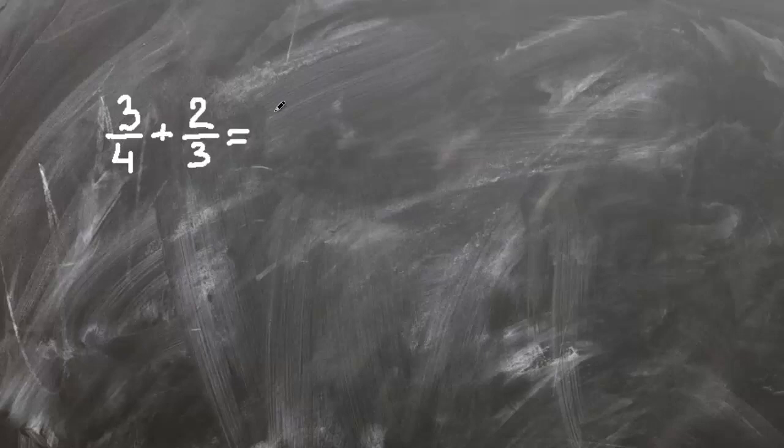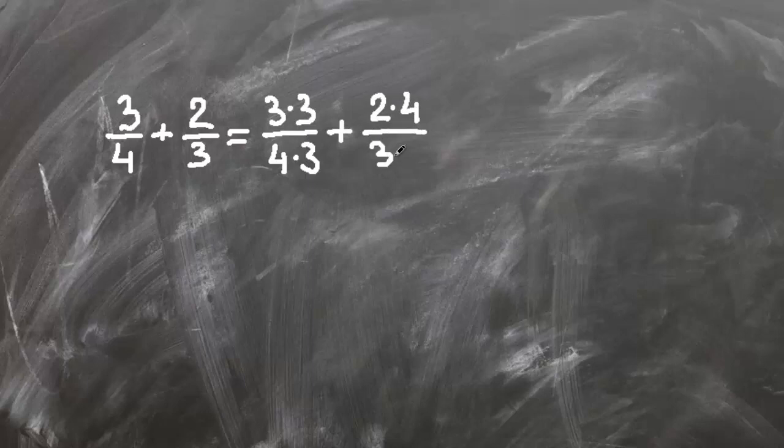Let's solve three quarters plus two thirds. Common denominator for three and four is twelve so we multiply three quarters by three and two thirds by four. We get three times three over four times three plus two times four over three times four.